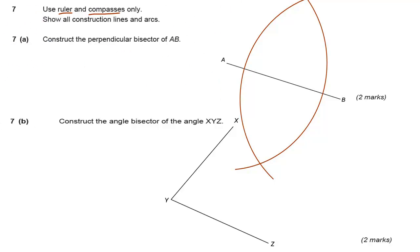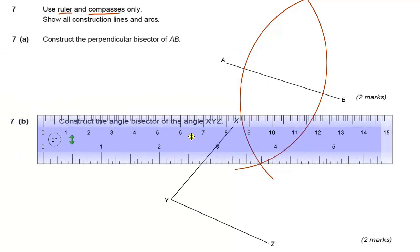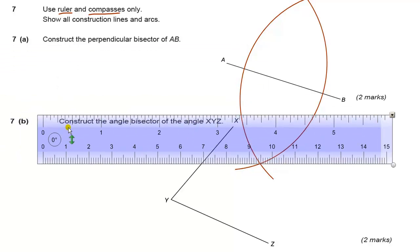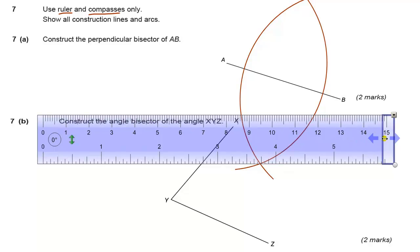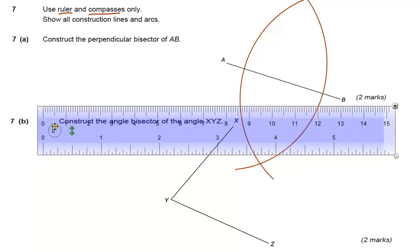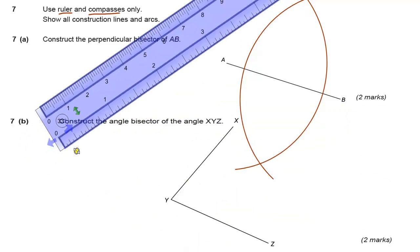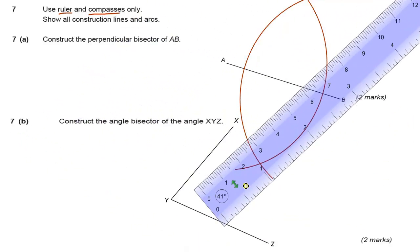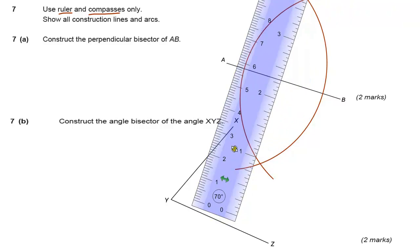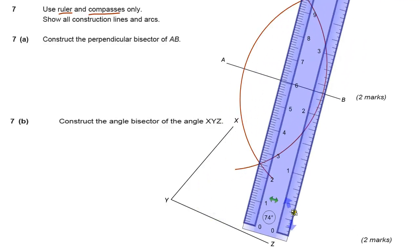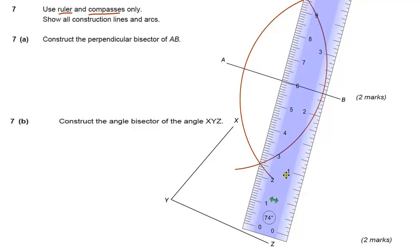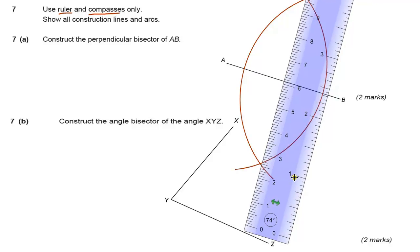And then we can get our ruler, and we can work out how to spin it around until we can draw a line through the two points where the two arcs cross.